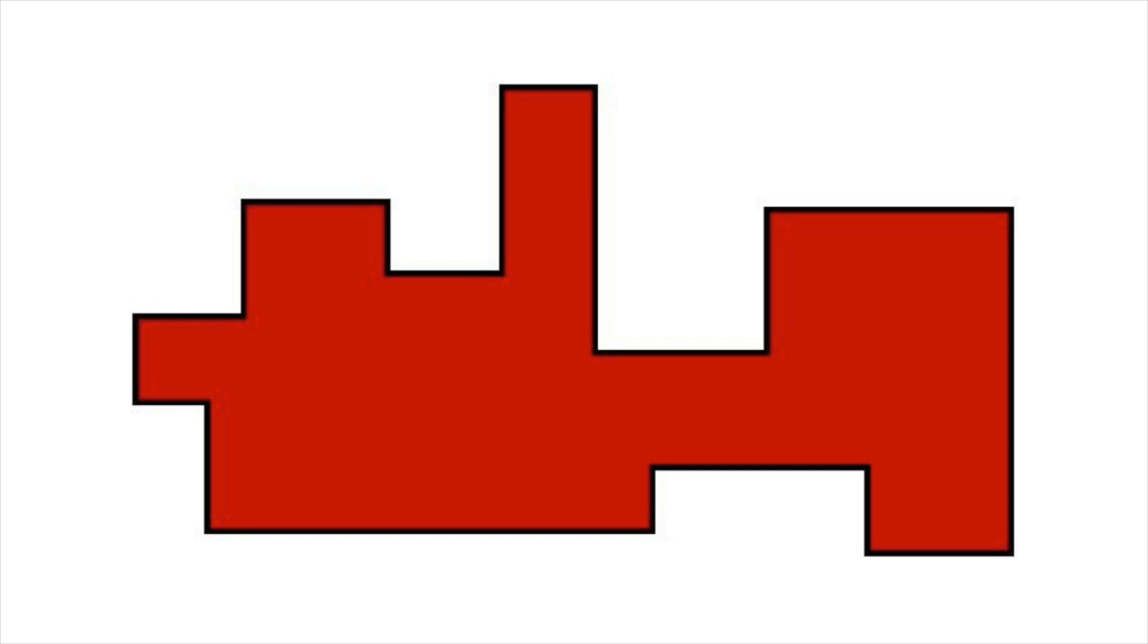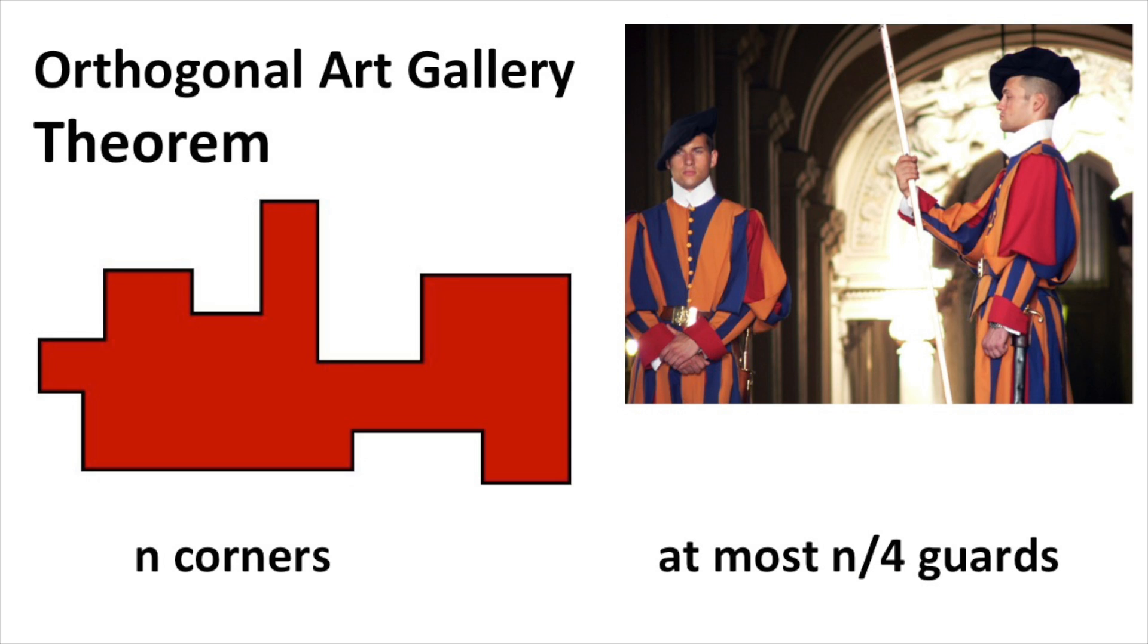A nice extension of the previous proof applies to orthogonal polygons, that is, polygons where all of the interior angles are either 90 degrees or 270 degrees. If there are n corners, the orthogonal art gallery theorem claims that at most n over four guards are enough to protect the gallery.